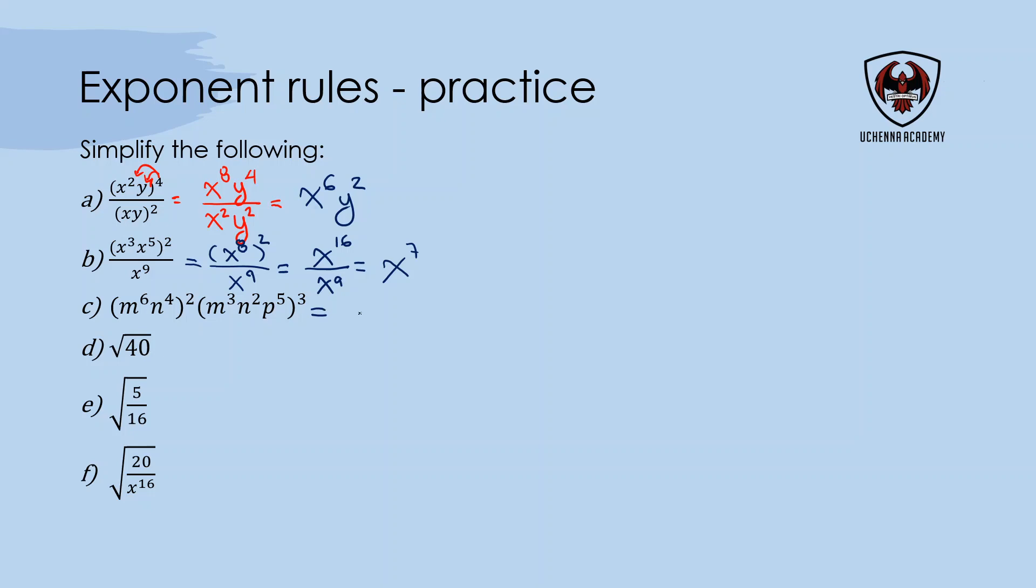In the third example, I'll distribute the exponent to each exponent within the parentheses. Everything is being multiplied, so I multiply each one of the exponents: n to the exponent 6 and p to the exponent 15. I can collect the m's—they're being multiplied, so exponents add: 12 plus 9 is 21. The n's also go together: 8 plus 6 is 14. And p unfortunately is on its own. That's the final answer.